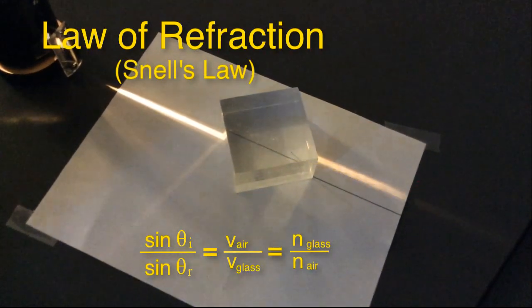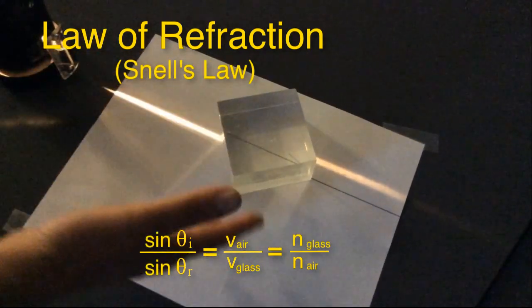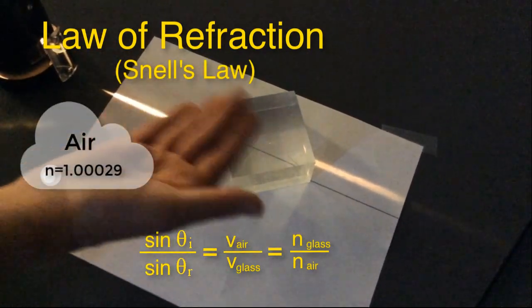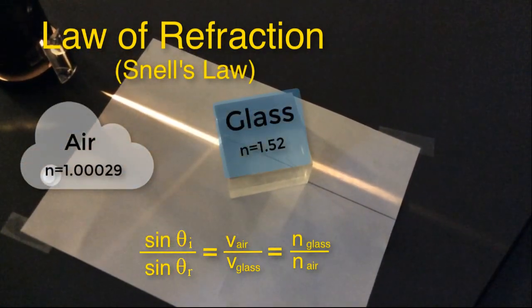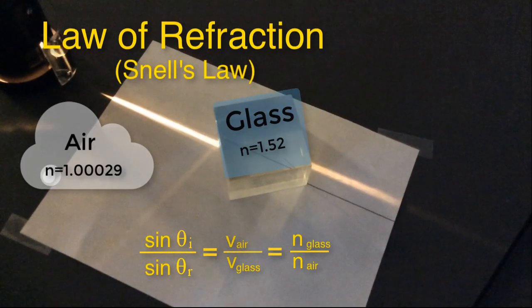That's why it refracts when the two media—the first medium is air, the second is glass—have different indices of refraction.